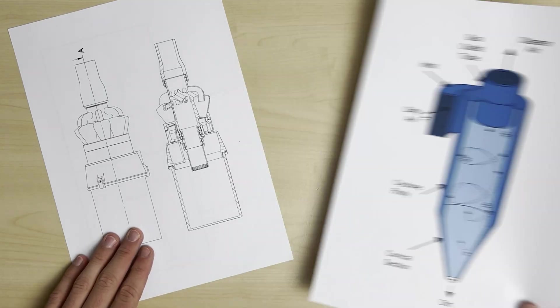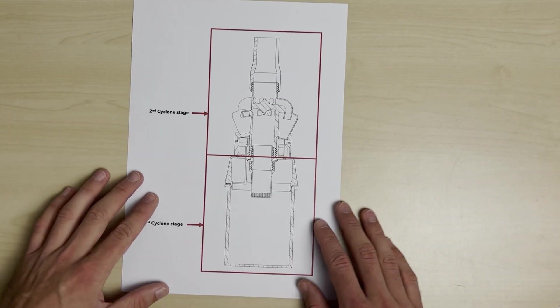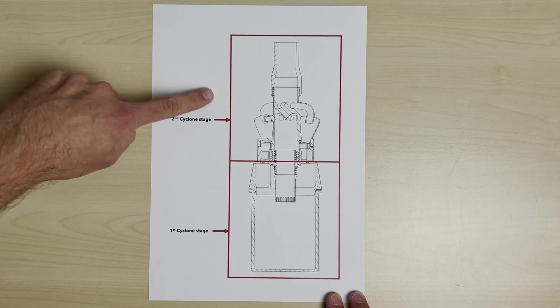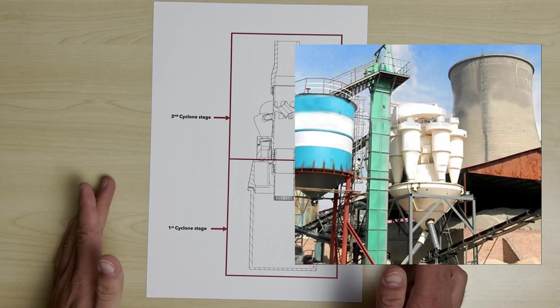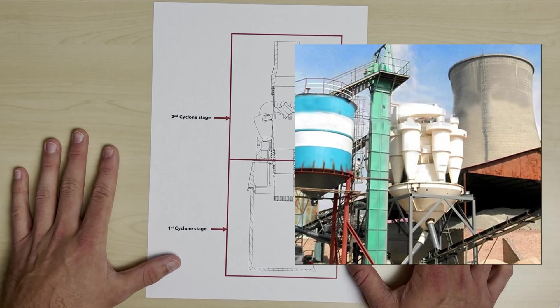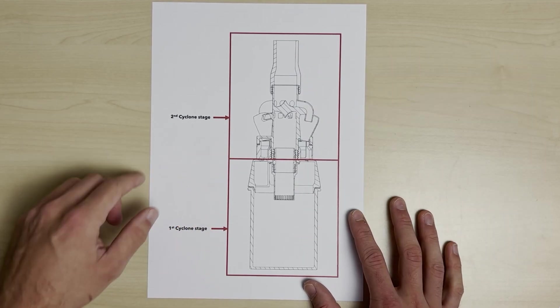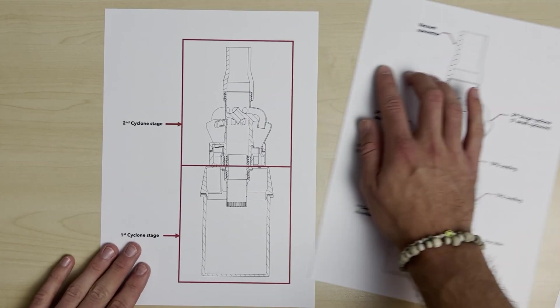For my specific job, I wanted to use a combination of a big cyclone as a first filter for large particles and smaller cyclones on top as a second filter stage for small particles. Kind of similar to the cyclone from this Chinese power plant here. These smaller cyclones needed to be arranged in quantity so that the air stream would not be too restricted.